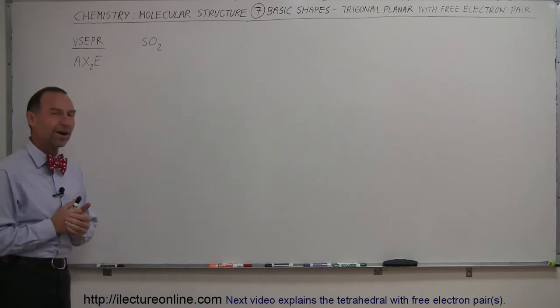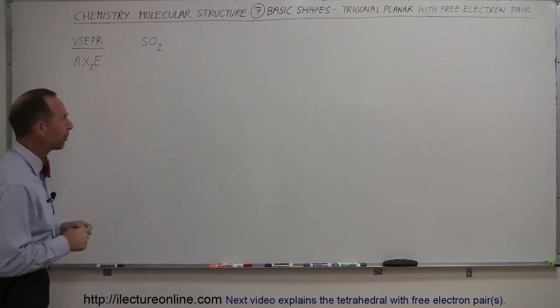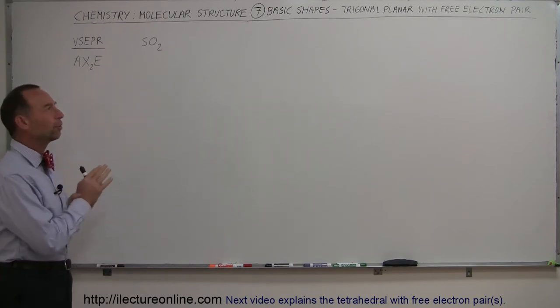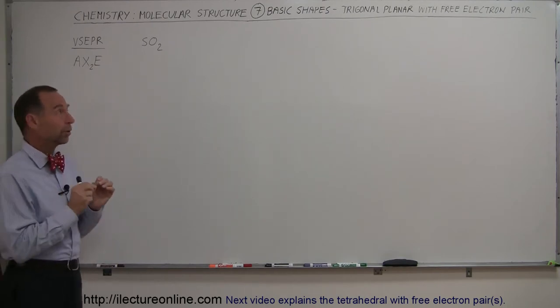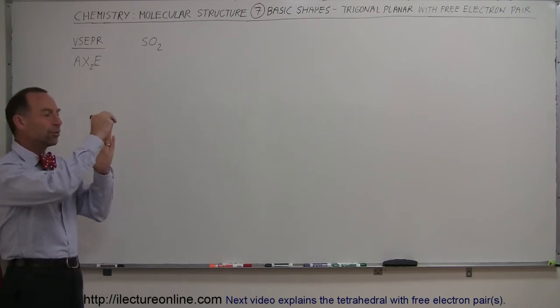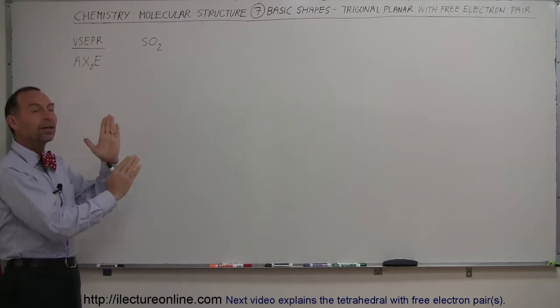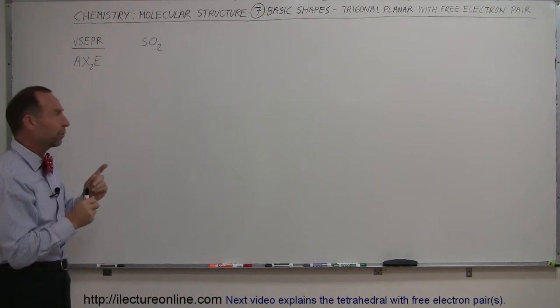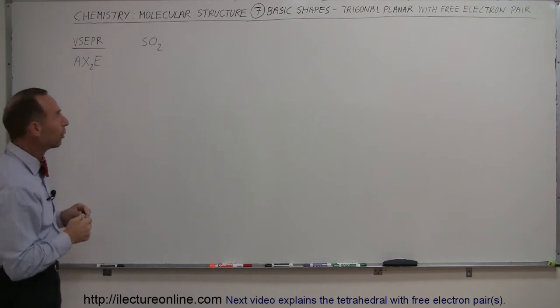But we're going to look at sulfur dioxide and we'll see that it looks pretty well the same as water. But again, what does that really mean? What does trigonal planar mean? Well, trigonal planar simply means that there's a central atom with three more atoms attached to it, kind of all in the same plane. But in this case, one of the atoms, one of the outside atoms, is going to be replaced by a free electron pair. We'll see in just a moment why that is so, with sulfur dioxide.